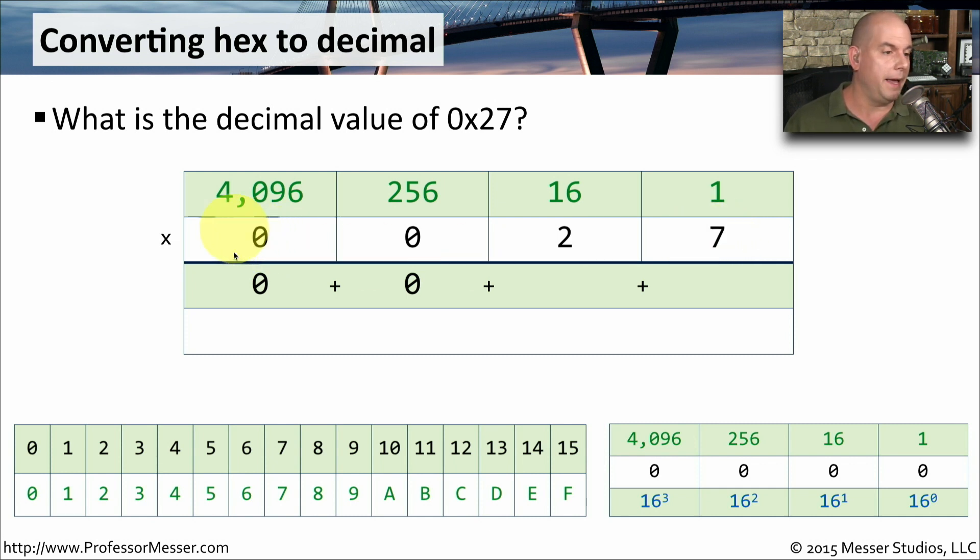What we want to do now is multiply these different values. We want to multiply 16 times 2 and we'll get 32, and we want to multiply 1 times 7 and we'll get 7. Now we simply add up all of these numbers at the bottom: 0 plus 0 plus 32 plus 7 is 39. So the decimal value of a hexadecimal 27 is 39.